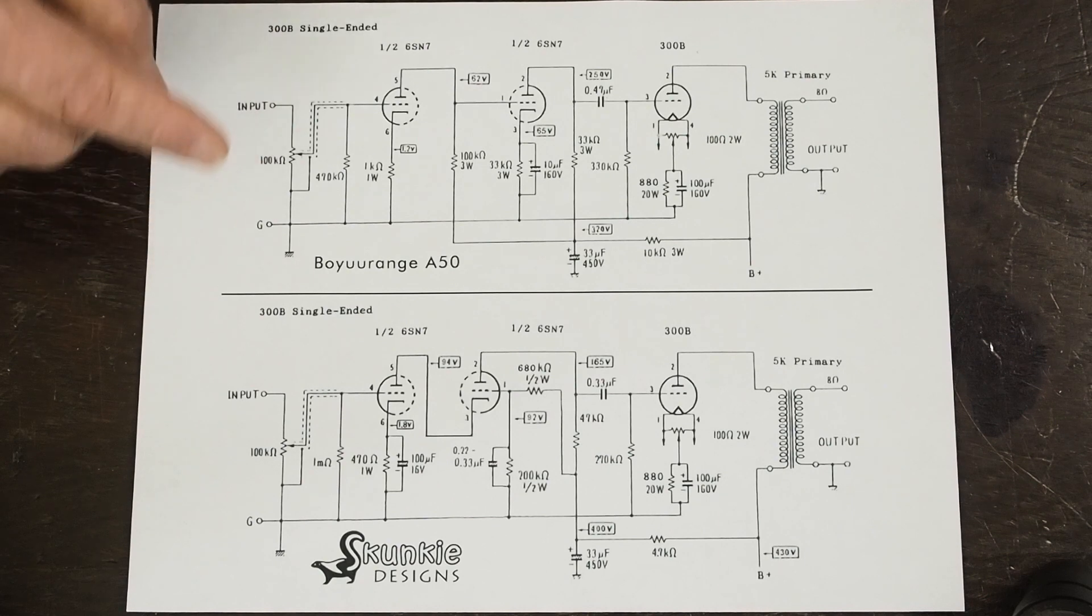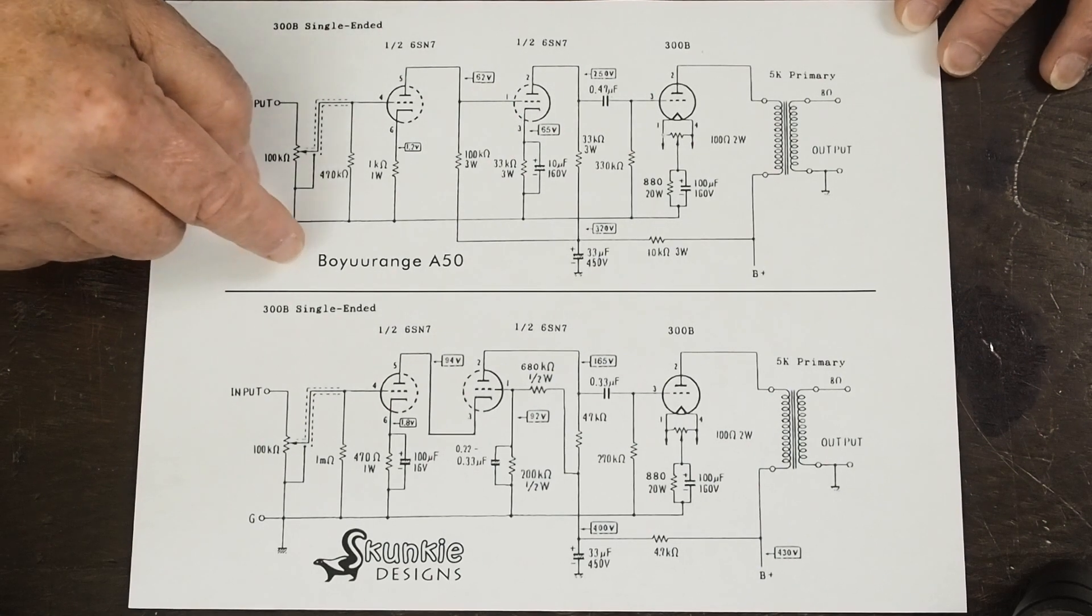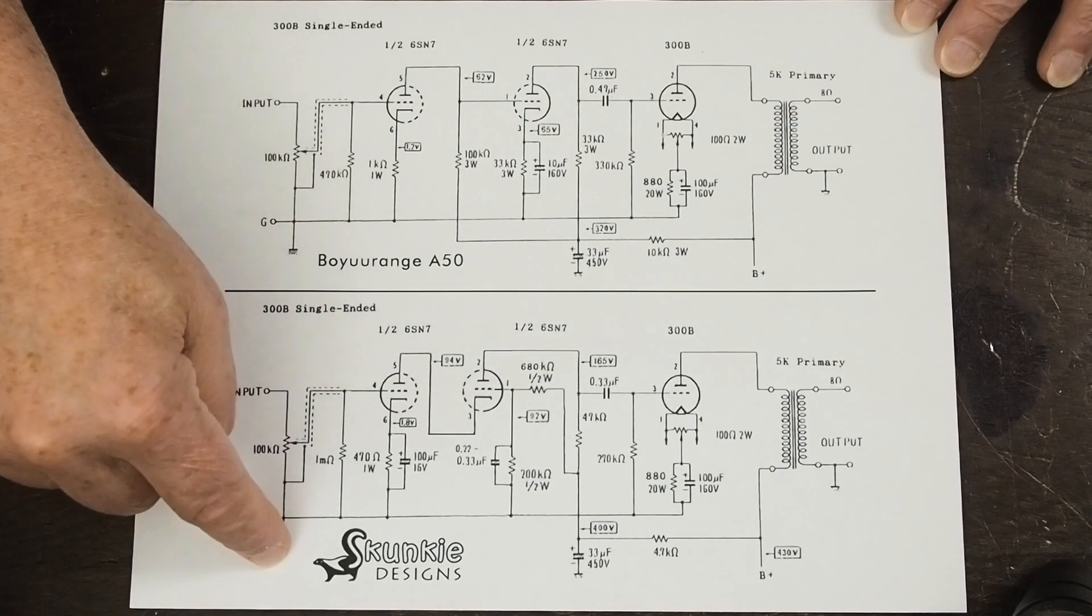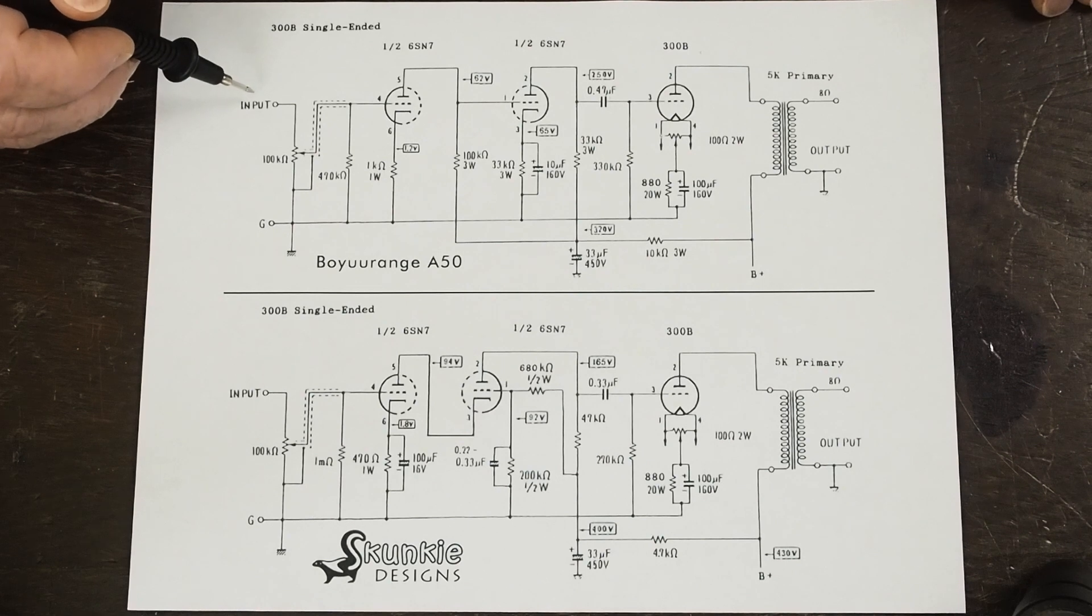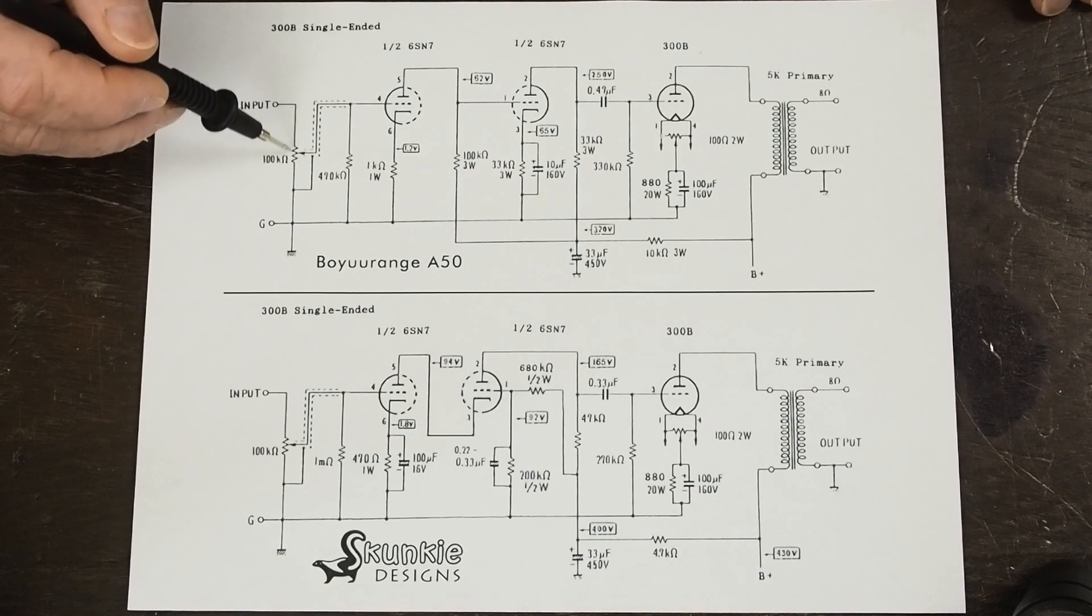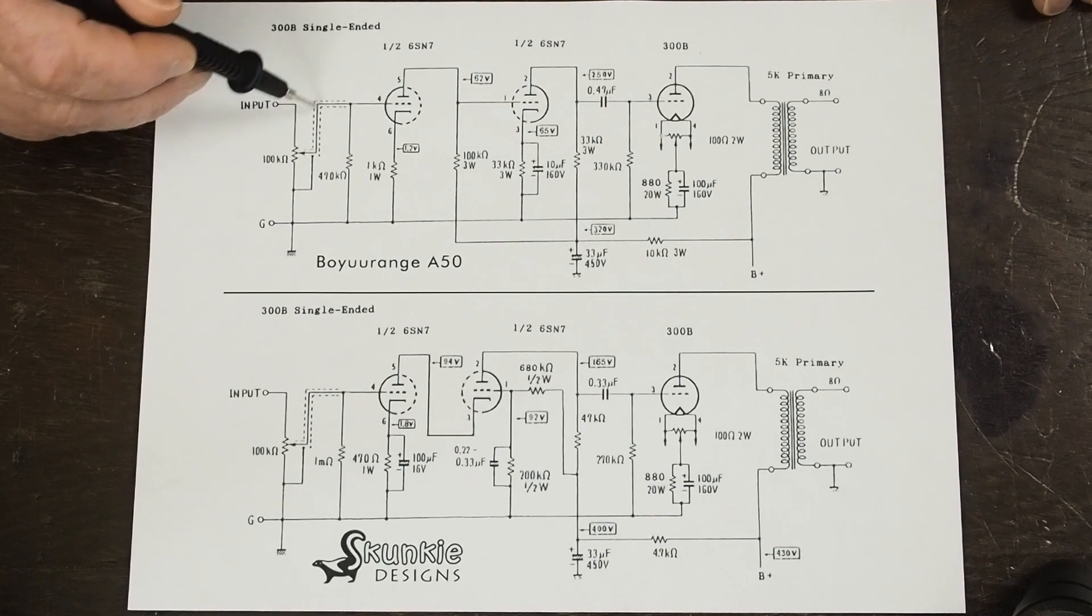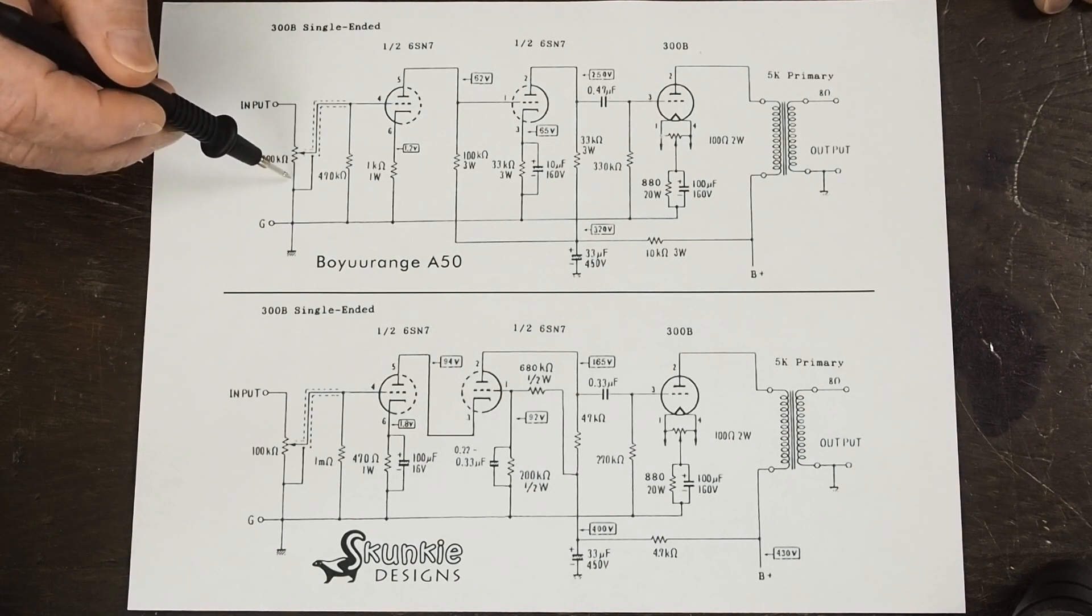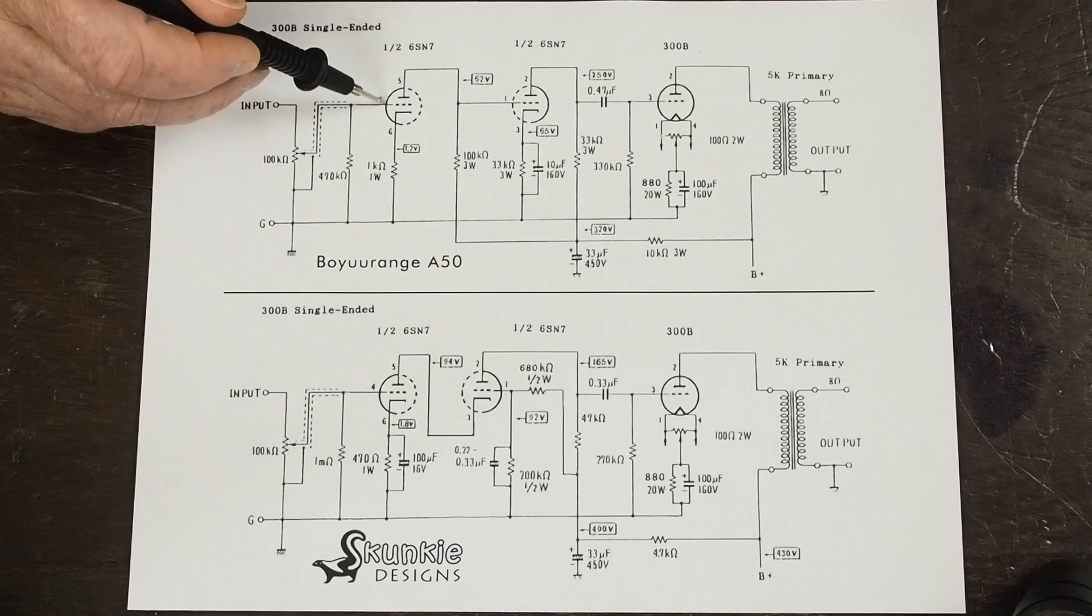So here we have the two designs sitting on top of each other drawn in a very similar format so it's easier to follow. This is the Boyurange A50 and here's the Skunky Designs version of it. First we'll follow the input signal through the amplifier. I do need to measure this. I just left this 100k because that's usually what volume controls are. But we'll measure it and see. But it doesn't really matter whether it's 50 or 100k. What this is doing is it's splitting the input signal between ground and the grid of the tube. So as you turn the volume down, it grounds some of the signal and as you turn it up, it sends more of it to the grid of this first stage tube grid.